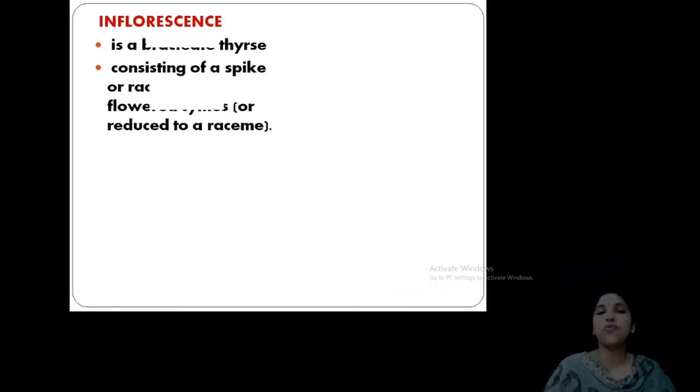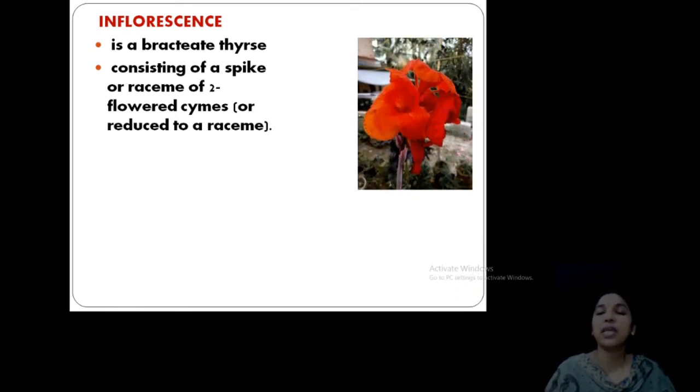Now, looking onto the inflorescence, you can see they are bracteate thyrse, usually bracteate, a spike or a raceme or cymose inflorescence. Bracts are prominent. See like this, bracteate flowers and clusters of flowers occur in that particular type of inflorescence, usually bracteate flowers in spike inflorescence.